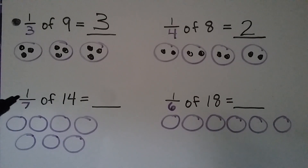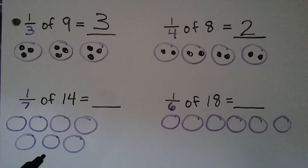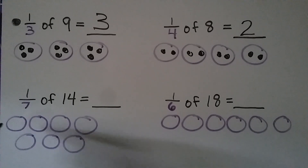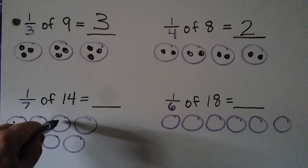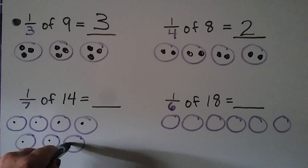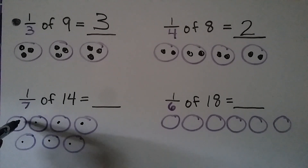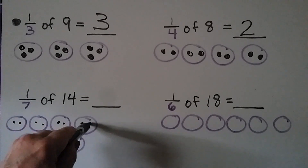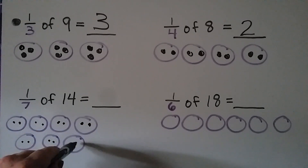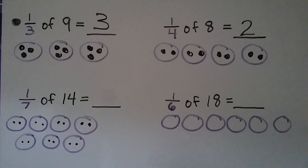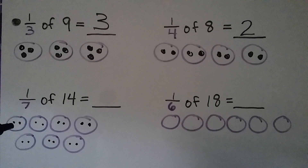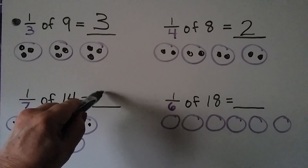For this one, we have one seventh of fourteen. Because the denominator is a seven, we make seven groups and start putting counters one at a time until we get to fourteen: one, two, three, four, five, six, seven, eight, nine, ten, eleven, twelve, thirteen, fourteen. In one of the groups we've got a one for a numerator — we can see there's two of them, so one seventh of fourteen is two.